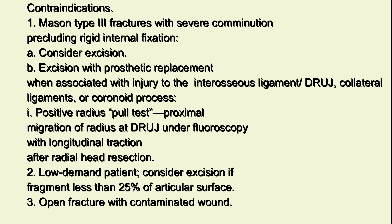Contraindications: 1. Mason type 3 fractures with severe comminution precluding rigid internal fixation. Consider excision, or excision with prosthetic replacement when associated with injury to the interosseous ligament/DRUJ, collateral ligaments, or coronoid process. A positive radius pull test — proximal migration of the radius at the DRUJ under fluoroscopy with longitudinal traction after radial head resection — indicates the need for replacement. 2. Low-demand patient: consider excision if fragment is less than 25% of articular surface. 3. Open fracture with contaminated wound.